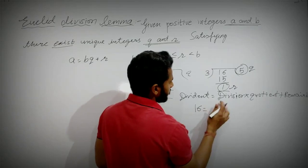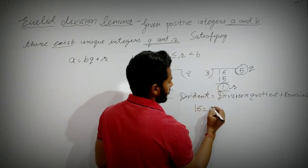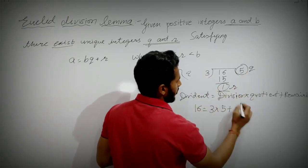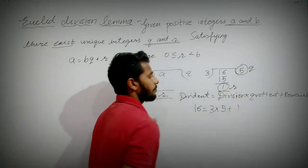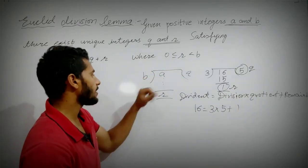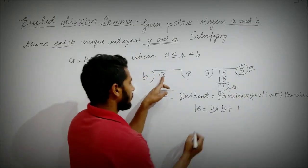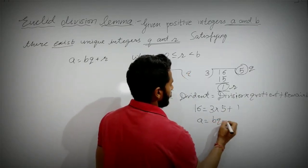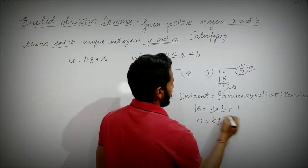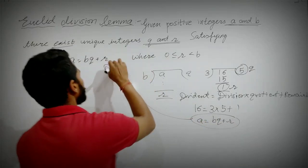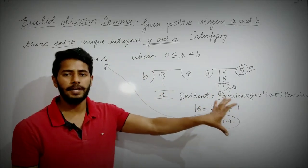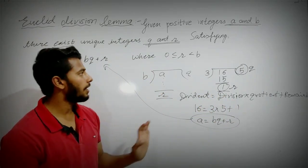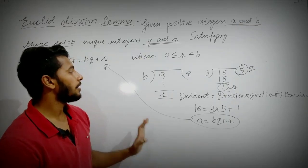So here 16 is our dividend, 3 is the divisor, quotient is 5, and remainder is 1. So we write: A = B × Q + R, meaning BQ + R. So this is nothing new — it is just simple division. A = BQ + R.